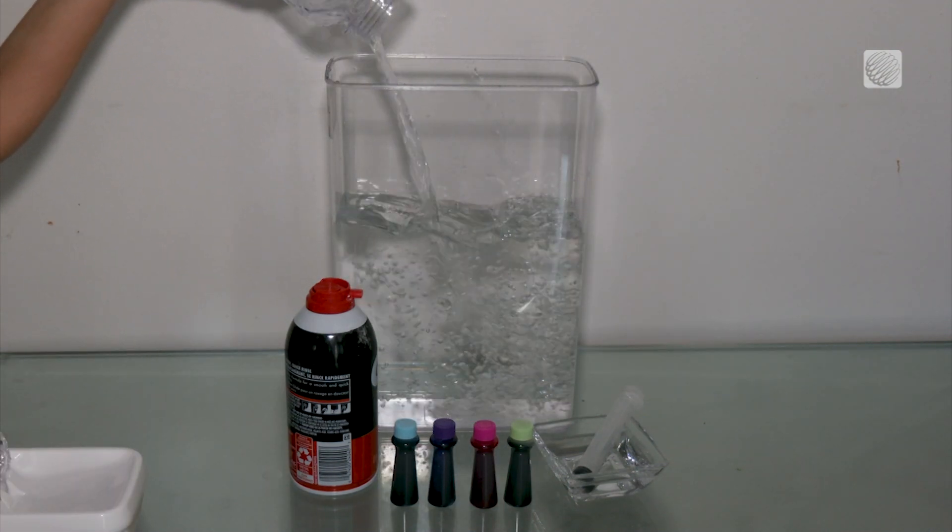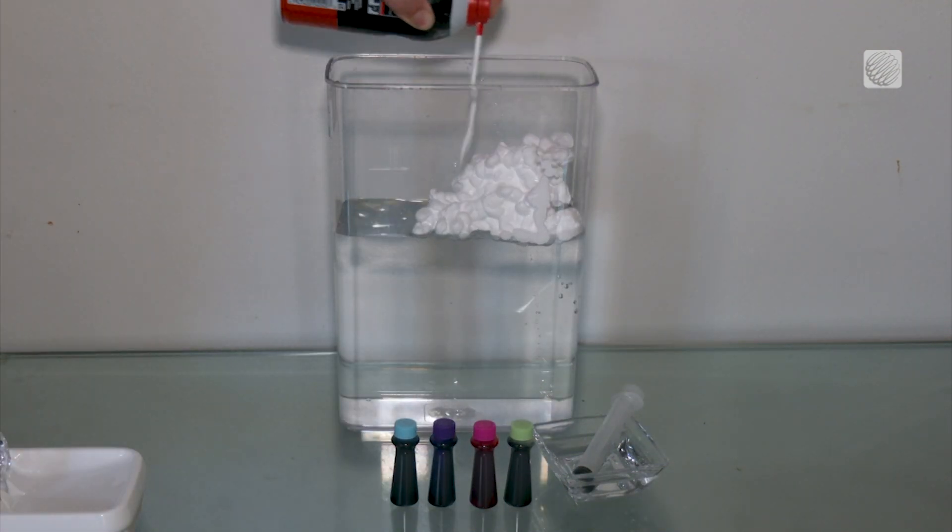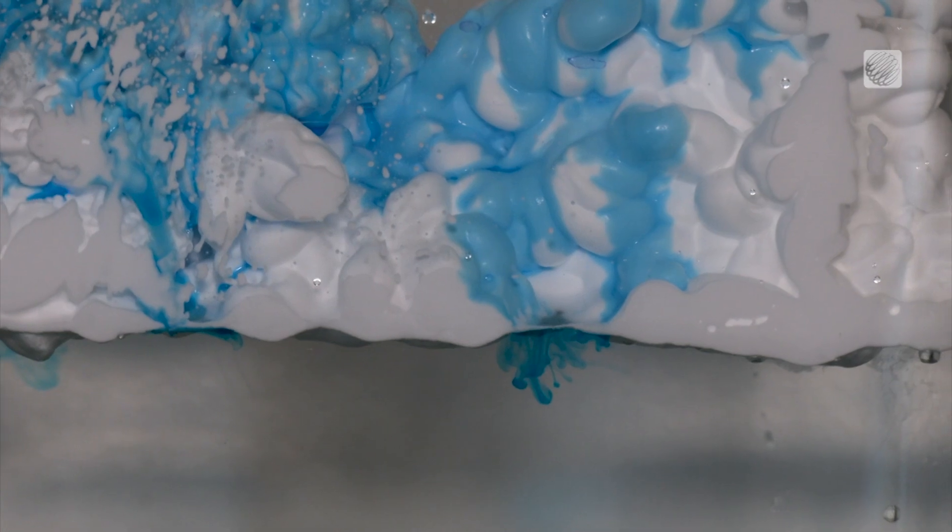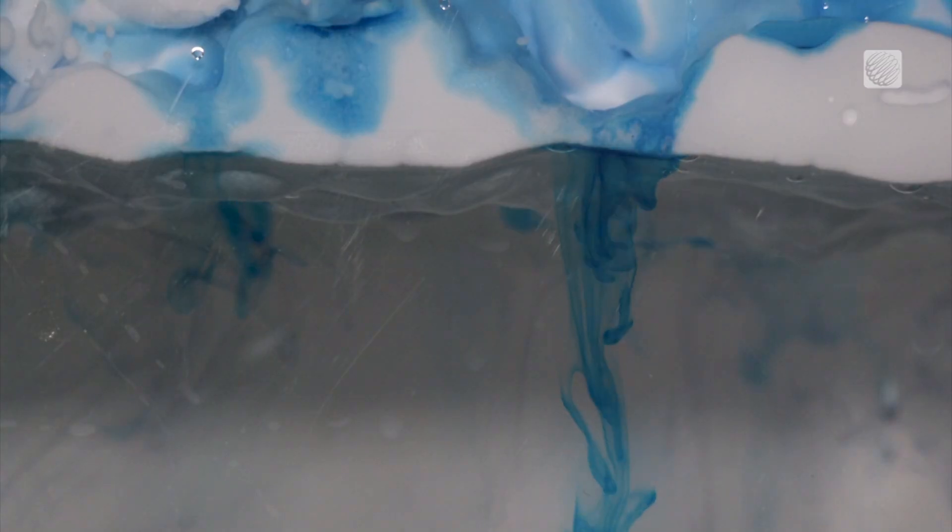Fill the container up halfway with water, then spray on some shaving cream cloud formations. You can explain that as you add the food coloring liquid mixed with water, the clouds become heavier. As in real life when the cloud gets heavier with droplets, it will begin to rain below in a mesmerizing display.